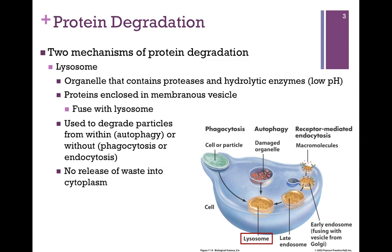There are actually two mechanisms for protein degradation. The first that we'll look at is the lysosome, which is an organelle within the cell. Here we have an illustration of a cell in blue, and here's our lysosome — this yellow structure — so it's a separate organelle bounded by a lipid bilayer. It contains proteases and other hydrolytic enzymes, and it tends to have a very low pH.